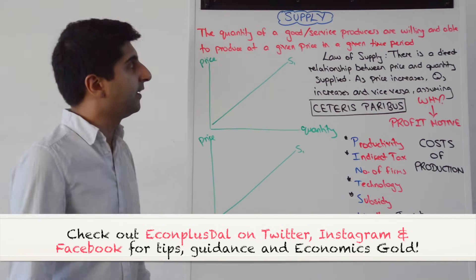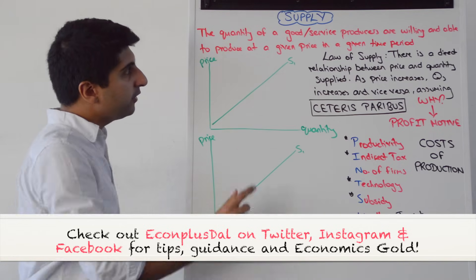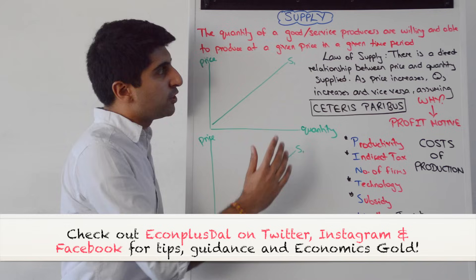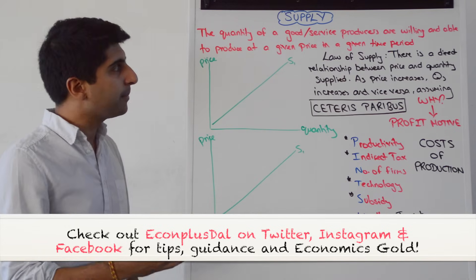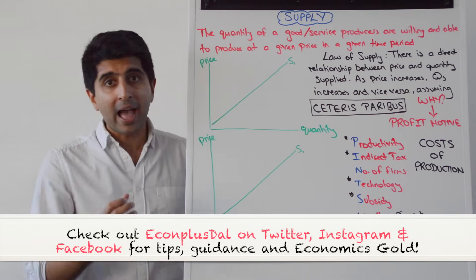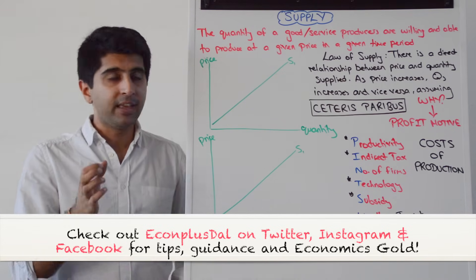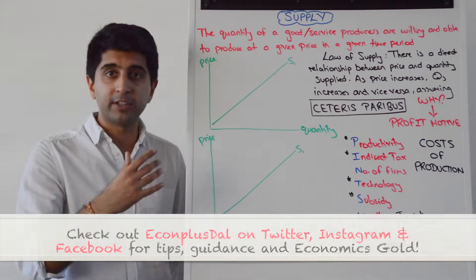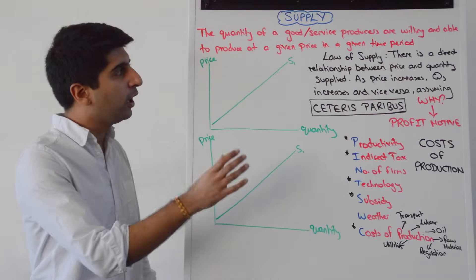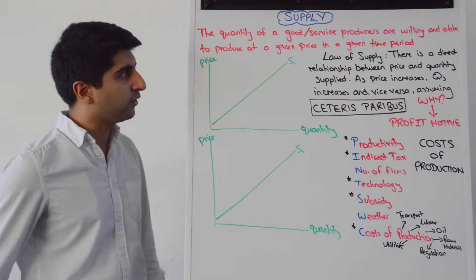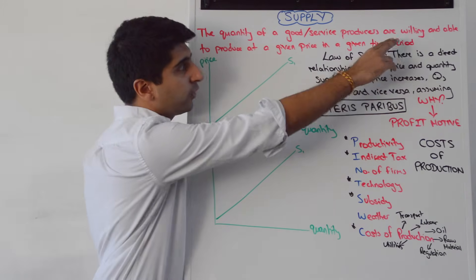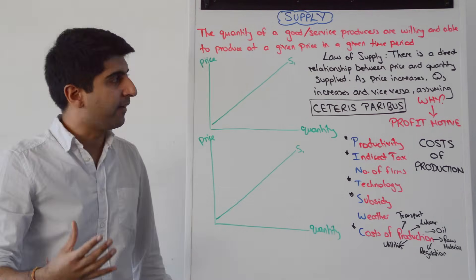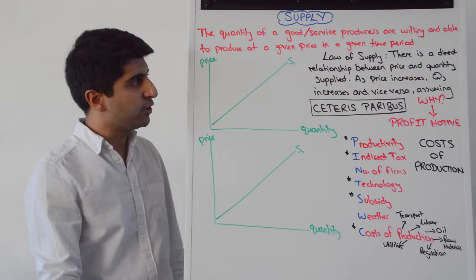Supply is defined like this: it is the quantity of a good or service that producers are willing and able to produce at a given price in a given time period. Very similar to our demand definition with a few things changed. The concept of willingness and ability is there again, but now for producers.